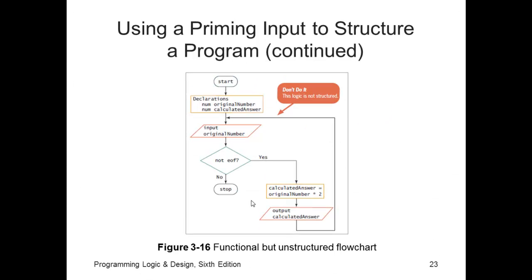Now here's a functional but unstructured flowchart. We get the original value, the original number. We evaluate if it's yes. We do our calculation, output the answer, and then we come back up here and get another original number. It's not structured because this flow arrow is supposed to come here, just above the question, instead of up here. So we have to get the next number again here in the body of the loop.